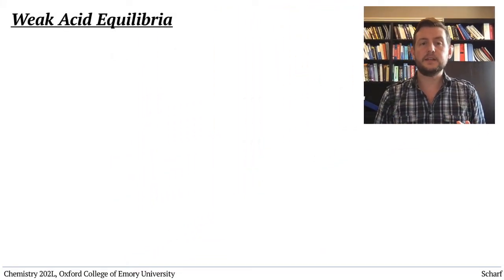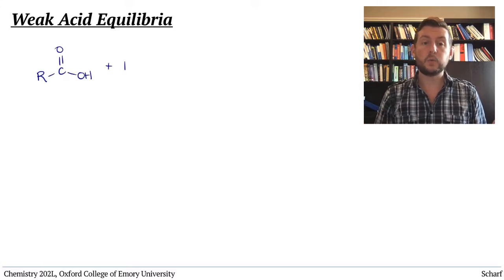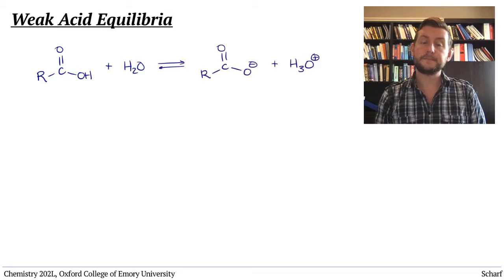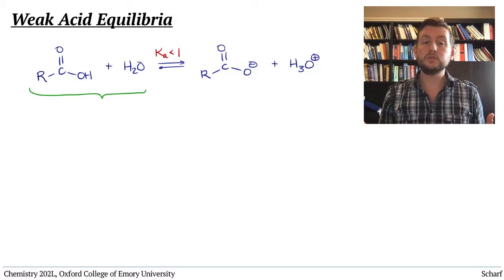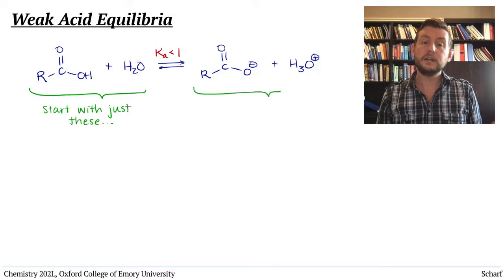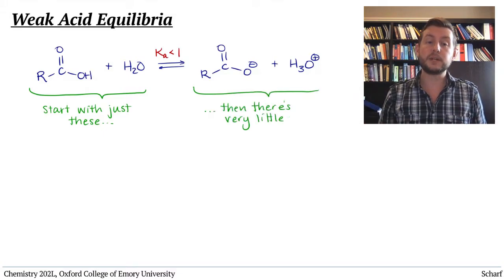To begin to understand this, let's think about the reaction of a weakly acidic functional group, say a carboxylic acid, with water, which is in equilibrium with the acid's conjugate base and H3O+. Since this is a weak acid, its Ka is relatively small, and if we started with a solution that just contained the acid itself and pure water, there's not much of the conjugate base present at equilibrium.